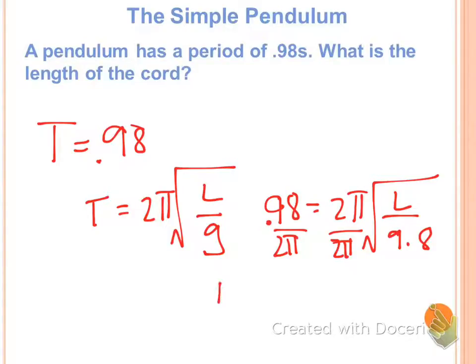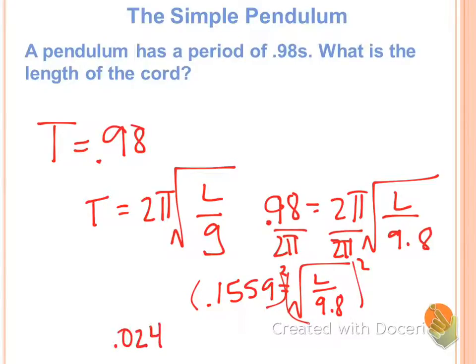So that gives me 0.1559 equals square root of L over 9.8. To get rid of that square root, I'm going to square both sides. Which gives me 0.0243.